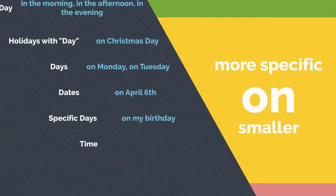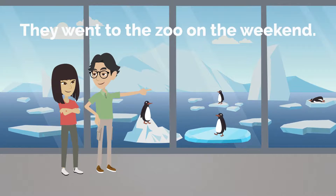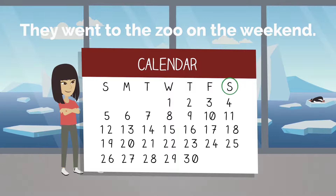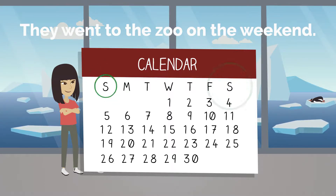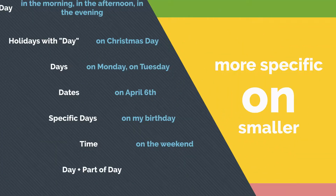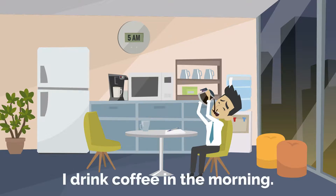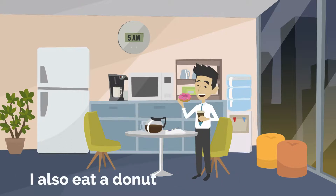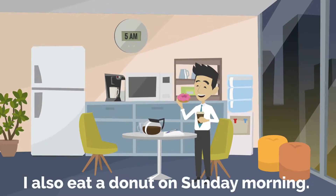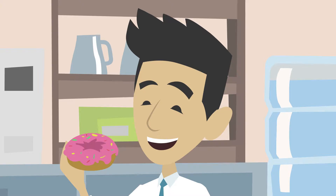On can also be used with time, such as on the weekend. For example, they went to the zoo on the weekend. The weekend — normally Saturday and Sunday — is more specific than just saying in one week. It can also be used with a day plus part of a day, such as on Sunday morning. For example, previously I stated that I drink coffee in the morning. However, I also eat a donut on Sunday morning. This indicates that I drink coffee every morning, but only on Sunday do I eat a donut.